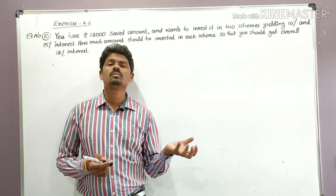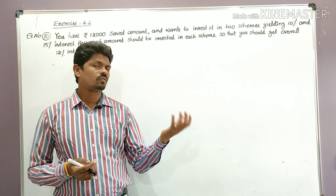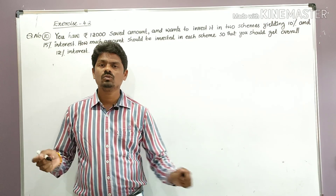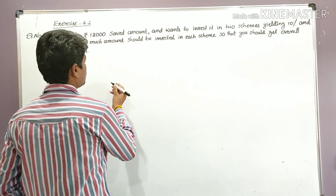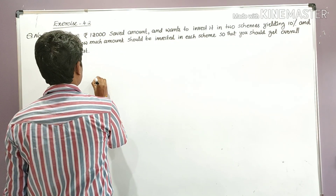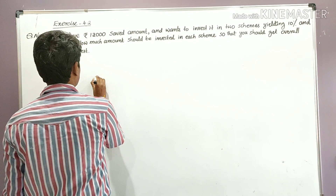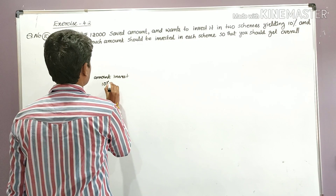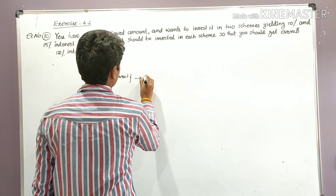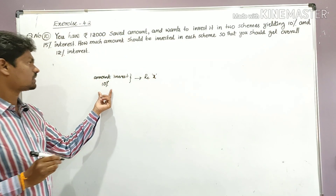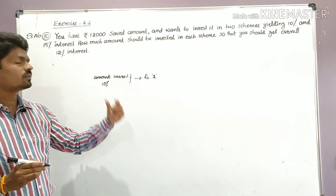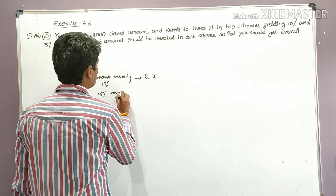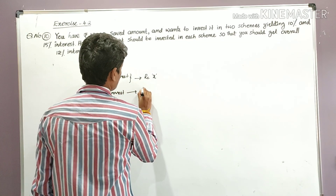First we identify the unknown quantities: how much to invest at 10 percent interest, and how much to invest at 15 percent interest. Let the amount to be invested at 10 percent rate of interest be rupees x, and the amount to be invested at 15 percent rate of interest be rupees y.